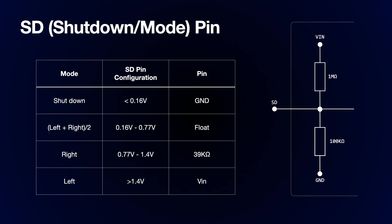If you tie this pin to ground then the amplifier will be shut down. If you tie it to VIN then the amplifier will play the left channel. And to play the right channel you need to use a pull up resistor.